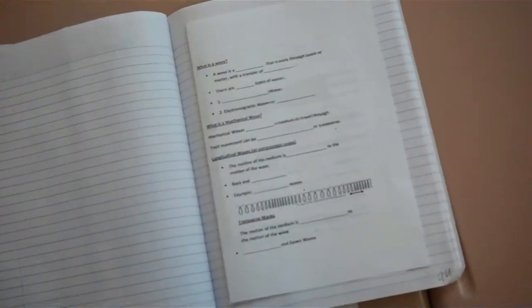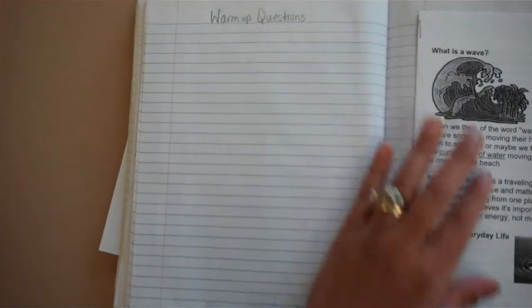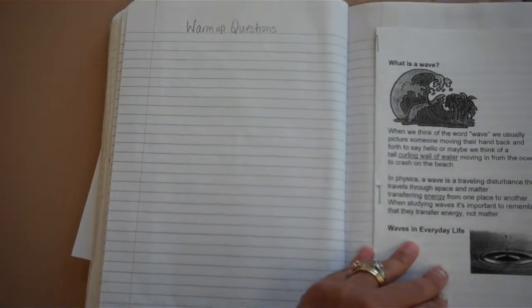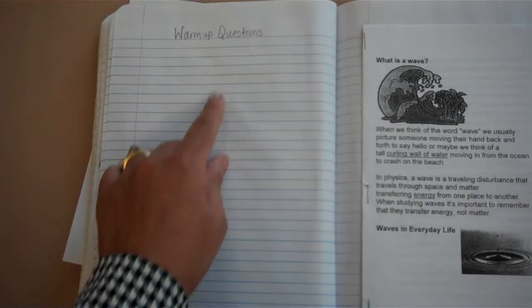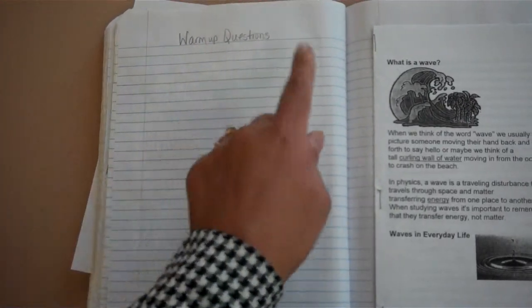95 should be your warm up questions on page 95. I think there were two questions on velocity, what is velocity and how to calculate it on page 95 in Cornell note format, so you should have drawn a line down the middle, question on the left, answer on the right.